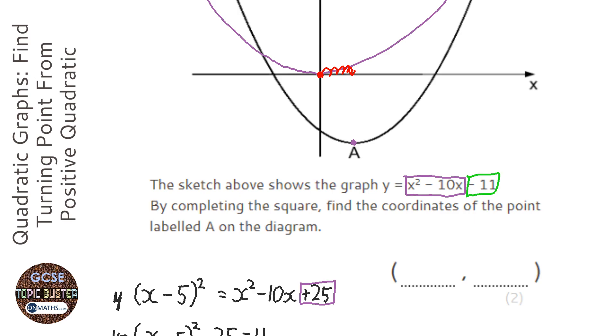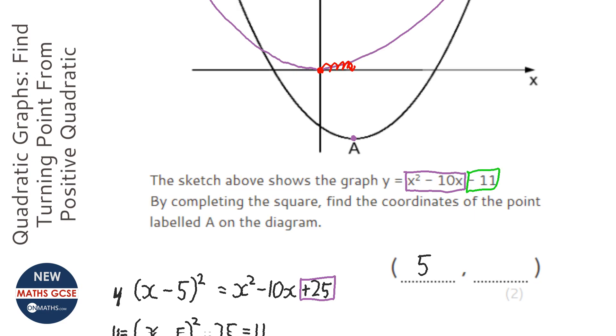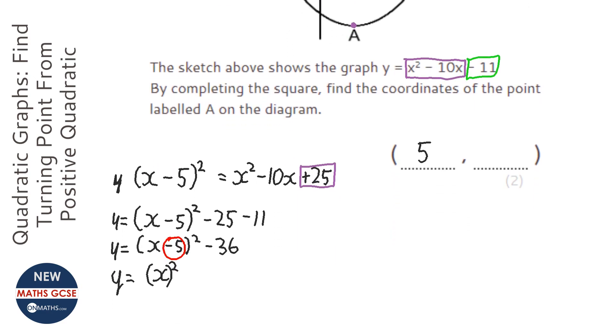So our minimum point will have the x coordinate of 5. Now to find the y coordinate, there's a couple of different ways. I would recommend the second way, but I'm going to tell you both. The first way is to realize that the bit here will tell us the y coordinate, so it would just be minus 36.